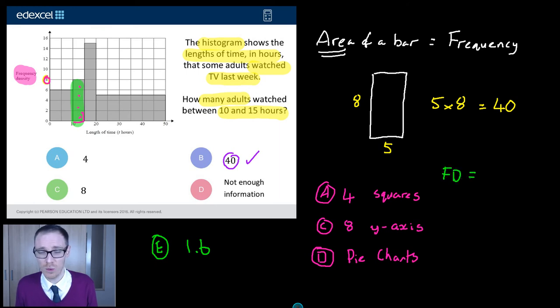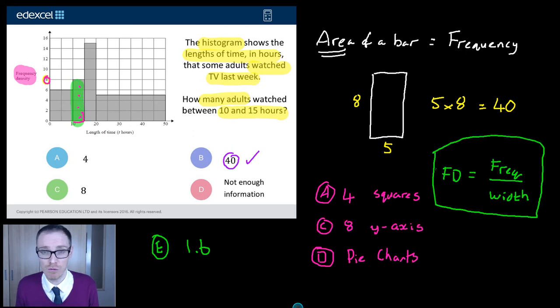Frequency density equals, repeat after me, frequency divided by the width of the group. Or class width, some people like to say. Now, if you've got that in your head, and you should have it in your head because it's an absolutely key rule.